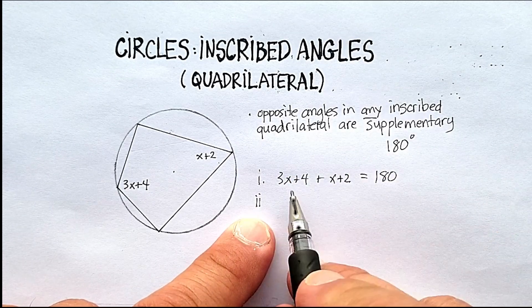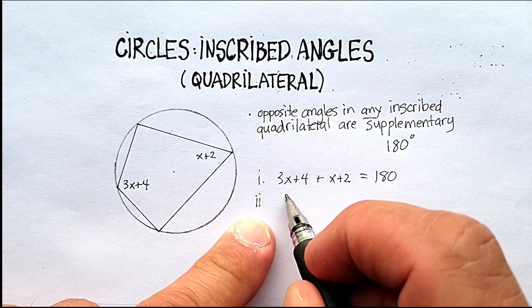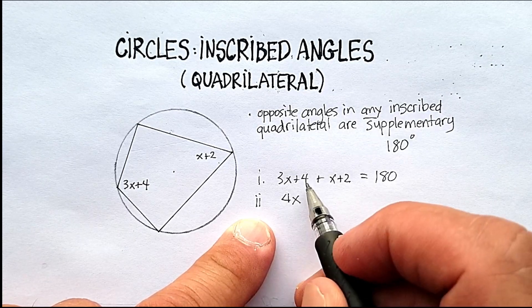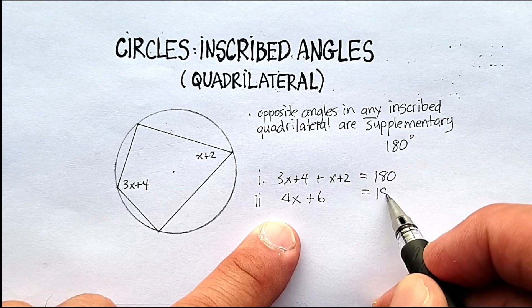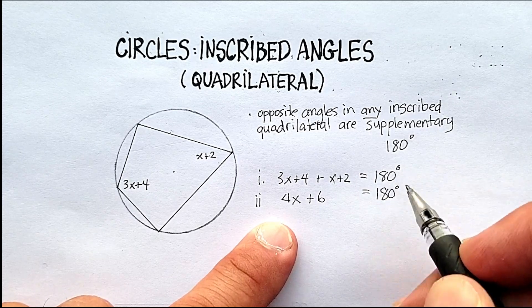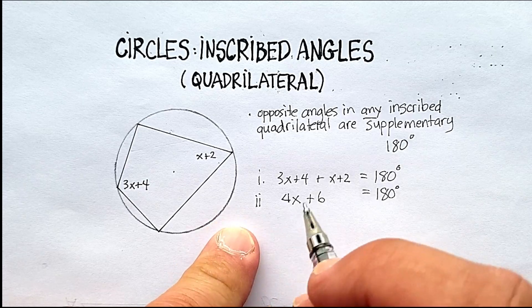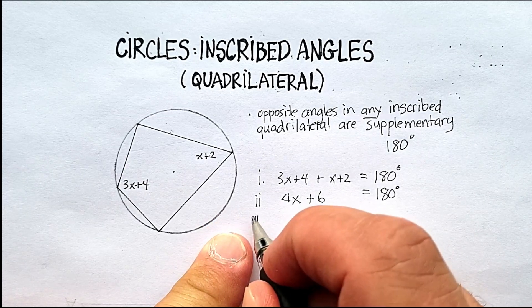I'm going to gather up my like terms on the left side. I'm going to get 3x plus x is 4x, plus 6 equals 180 degrees. I like to number my steps by putting these little Roman numerals in here.